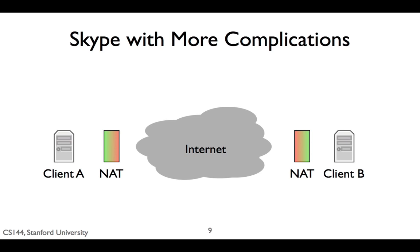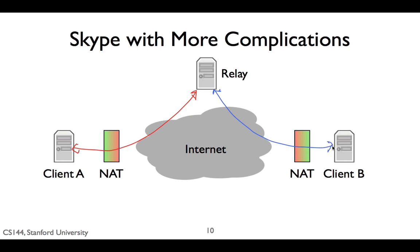So what does Skype do if both clients are behind NATs? We can't reverse the connection — client A can't open a connection to client B, and client B can't open a connection to client A. To handle this case, Skype introduces a second kind of server called a relay. Relays can't be behind NATs. If both client A and client B are behind NATs, they communicate through a relay — they both open connections to the relay. When client A sends data, the relay forwards it to client B through the connection that B opened. Similarly, when client B sends data, the relay forwards it to client A through the connection client A opened.